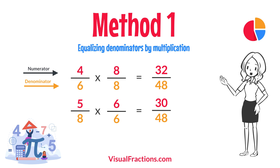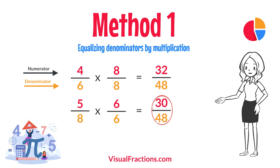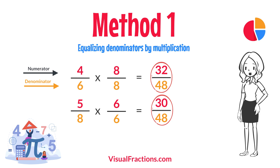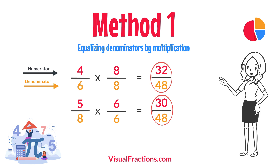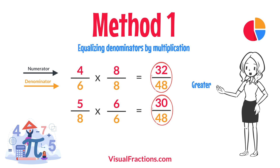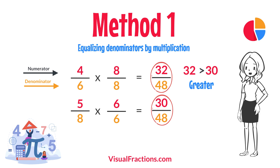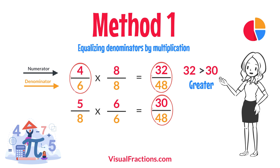Now, with both fractions expressed with a denominator of 48, we can easily compare them. Comparing these, 32 forty-eighths is greater than 30 forty-eighths, so 4 sixths is the larger fraction.